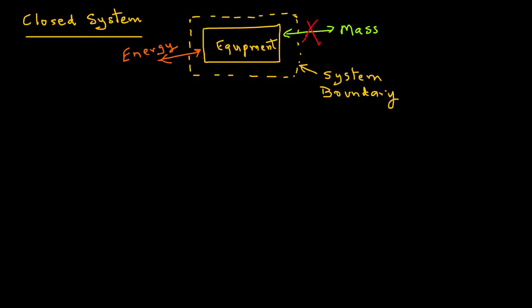For example, no water can go in or no food product can go in. So, the boundary is impervious to any mass flow in or out of the system. So, this is a closed system.